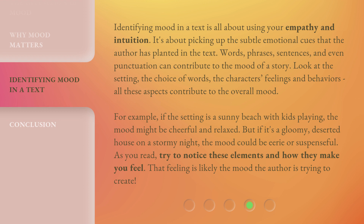For example, if the setting is a sunny beach with kids playing, the mood might be cheerful and relaxed. But if it's a gloomy, deserted house on a stormy night, the mood could be eerie or suspenseful. As you read, try to notice these elements and how they make you feel. That feeling is likely the mood the author is trying to create.